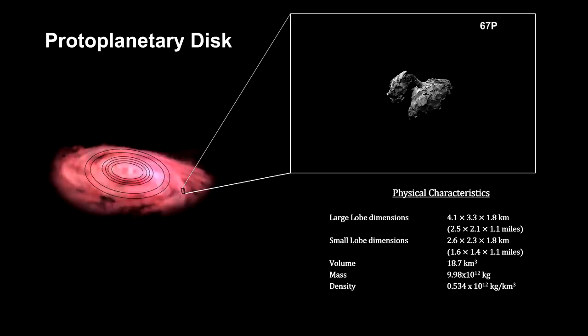Comet 67P, visited by the Rosetta mission in 2014, is thought to be a combination of two planetesimals that bound together in a slow speed collision. Their combined mass is just under 10 trillion kilograms.